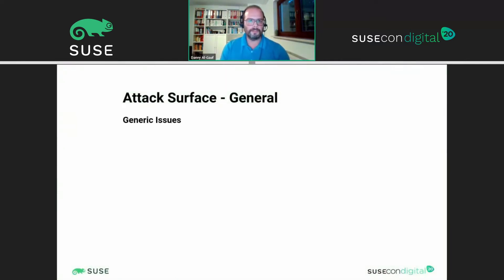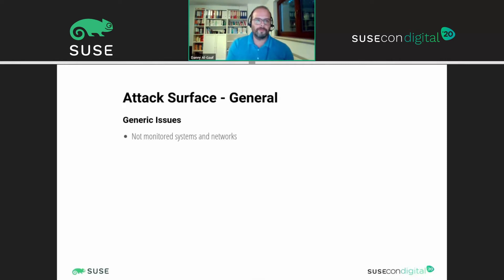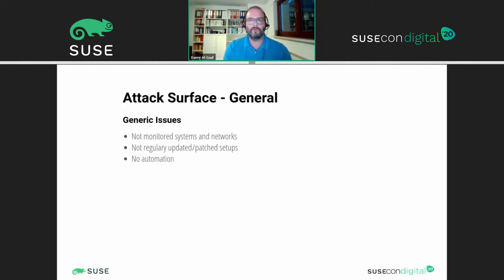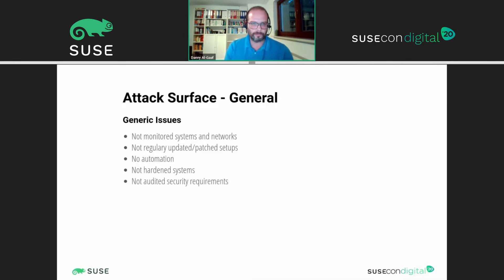There are some general issues with attack surface on Ceph. Not monitored systems and networks are really bad. Not regularly updated and patched setups — both the OS and Ceph itself — are also an issue. One of the biggest issues is probably no automation; everything managed and deployed by hand usually ends up in a weird state and can be attacked easily. Not hardened systems, not audited security requirements, and not aware or trained Ceph admins are all big threats.